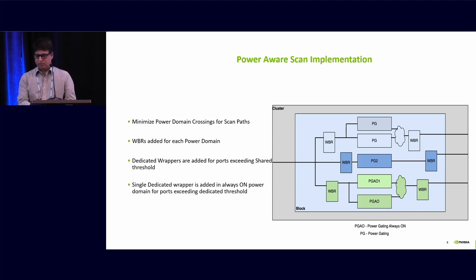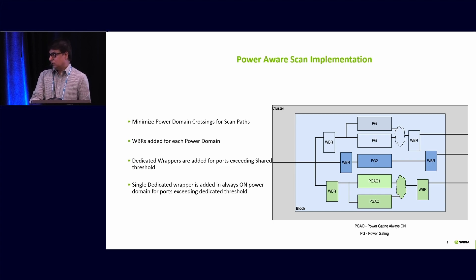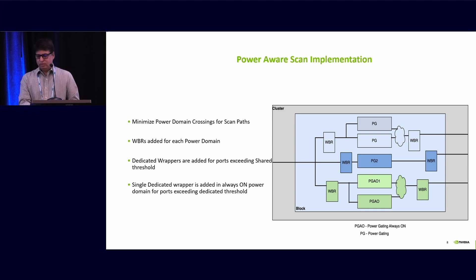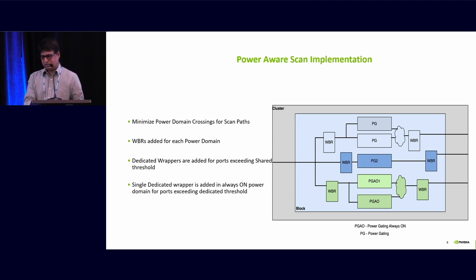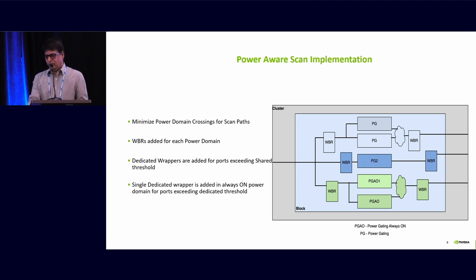Power-aware scan implementation. We minimize the power domain crossing of the scan path. WBR is added for each power domain. If the shared threshold is exceeded, a shared wrapper is added. If the shared threshold is further exceeded, we insert a single dedicated wrapper. If the dedicated threshold is exceeded, we insert the dedicated wrapper in the always-on power domain.